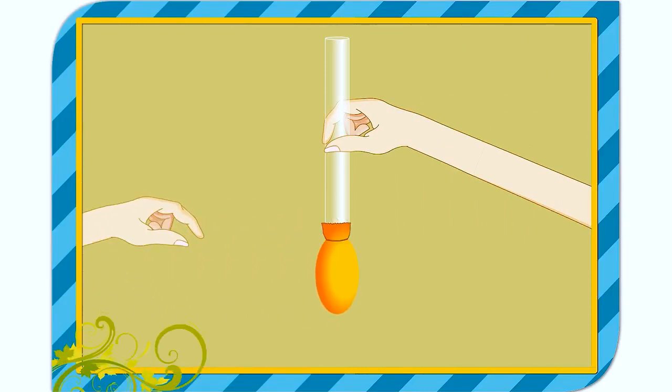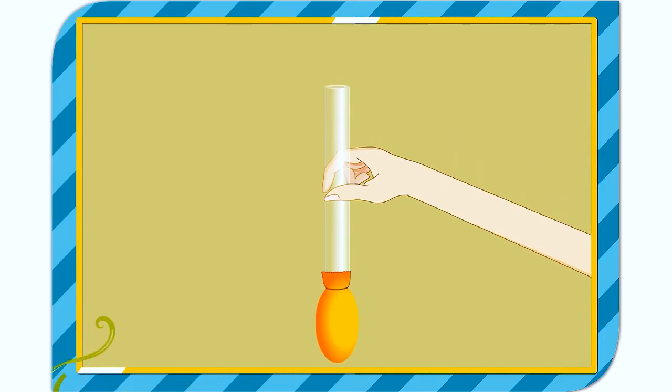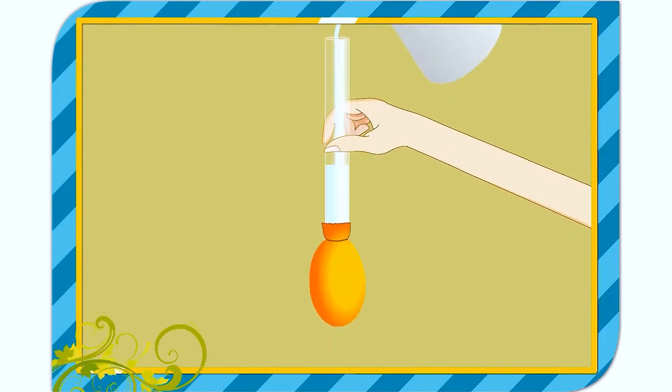Take a glass tube opened at both ends. To one end tie a rubber balloon. Hold the glass tube vertically and pour water into it. You will observe that the balloon bulges out. Now, pour more water into the tube. You will see that the size of the bulge increases.